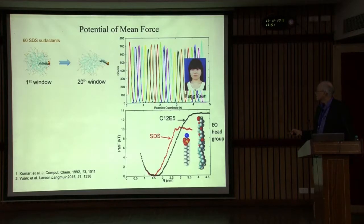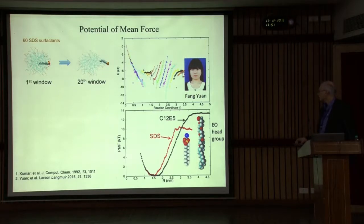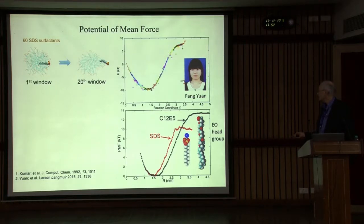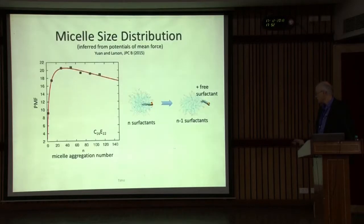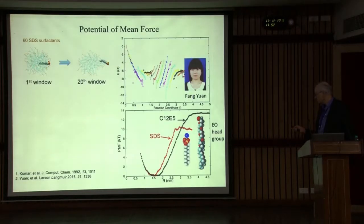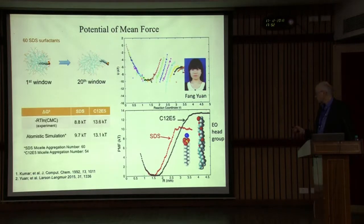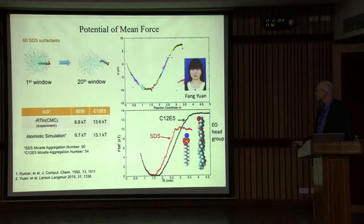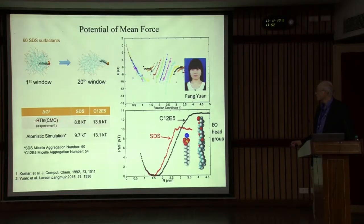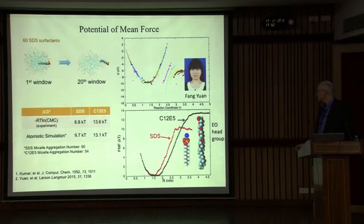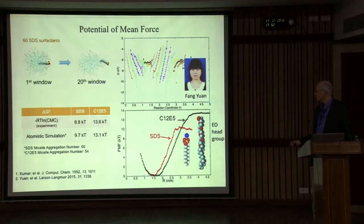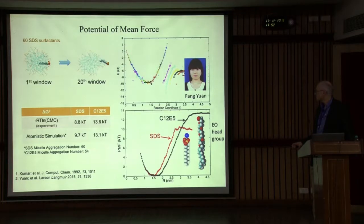This is called WHAM, or weighted histogram analysis method, and it's quite successful. Here's an example of two surfactants: sodium dodecyl sulfate, and a 12-carbon alkane with an ethoxylated head group. The height of these potential wells can be obtained, and from those we can compare to experimental data. One can take the logarithm of the critical micelle concentration multiplied by RT — that should, according to theory, be the height of this potential well. From the simulations, we get reasonably good agreement for the typical micelle size for these particular surfactants, confirming this approach.